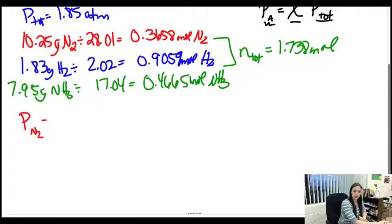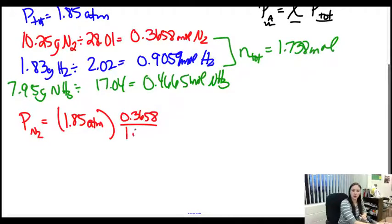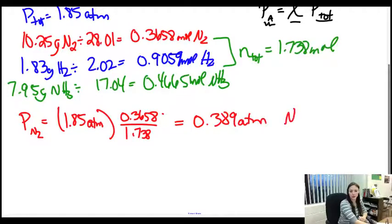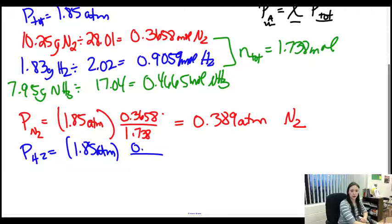So we start off with N2. So my pressure of N2 is going to be the total pressure 1.85 atmospheres times the percentage of N2 that is in there. So I've got 0.3658 divided by 1.738. We divide, get the percentage, and then multiply. It's just a percentage without the times 100. And I get 0.389 atmospheres for N2. If we look at the next one which is H2, again you take 1.85 atmospheres, but now there's actually more H2, so it's 0.9059 over 1.738. So my amount should be bigger here, which it is. It's 0.964 atmospheres.